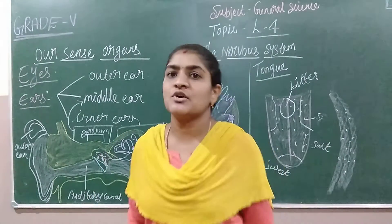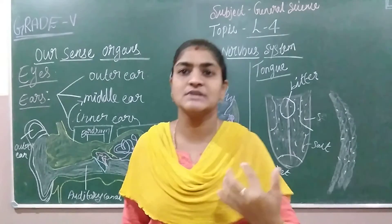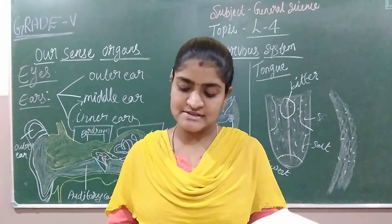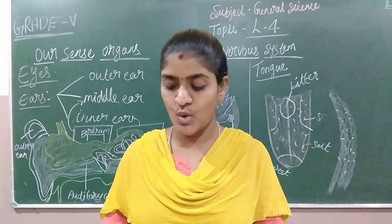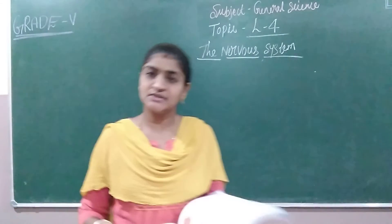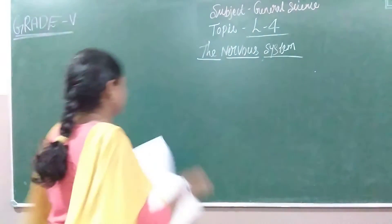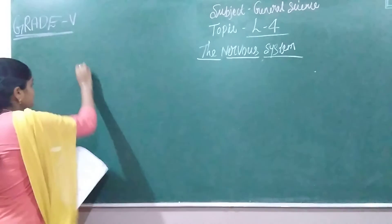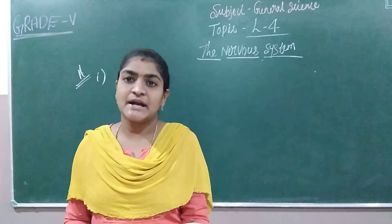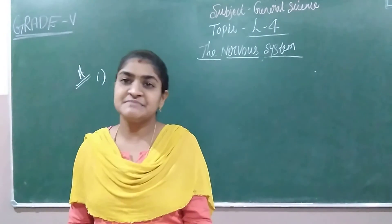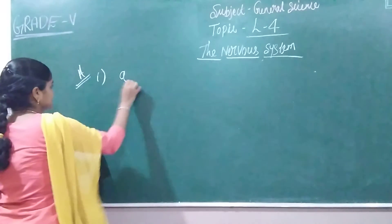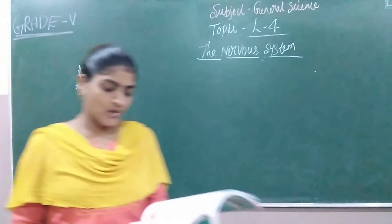So this is about our sense organs — I have explained how they work and what their uses are. Now we will move on to the exercise. Take out page number 195. Choose the correct option: the first question is, which is the largest part of our brain? The answer is A — cerebrum. It is called the largest part of the brain.